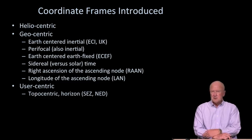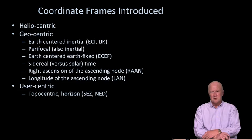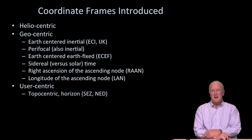Earth-centered, Earth-fixed is of course the frame that we all live in — we rotate with the Earth, as do most users of GPS. Therefore, the fundamental operation of the frame transformations for GPS is to go from Keplerian parameters, to perafocal, to Earth-centered inertial, to Earth-centered Earth-fixed. That way we finally pin down the satellite locations in the same frame that our users operate in. One of the subtleties associated with that will be sidereal time, and also the right ascension of the ascending node — the point in inertial space where the satellite punches through the equatorial plane on its way upward in its orbit around the Earth. Then there's the longitude of the ascending node — the same point, but measured in an Earth-centered Earth-fixed frame rather than Earth-centered inertial.